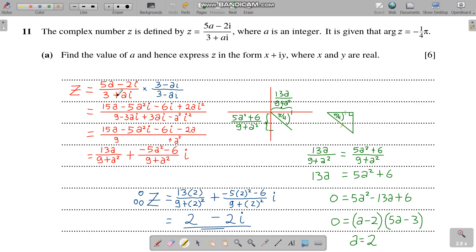Now we just multiply: 5a times 3 gives 15a, 5a times minus ai gives minus 5a squared i, minus 2i times 3 gives minus 6i, minus 2i times minus ai gives plus 2ai squared. And remember i squared is minus 1, so this is just minus 1, giving minus 2a.